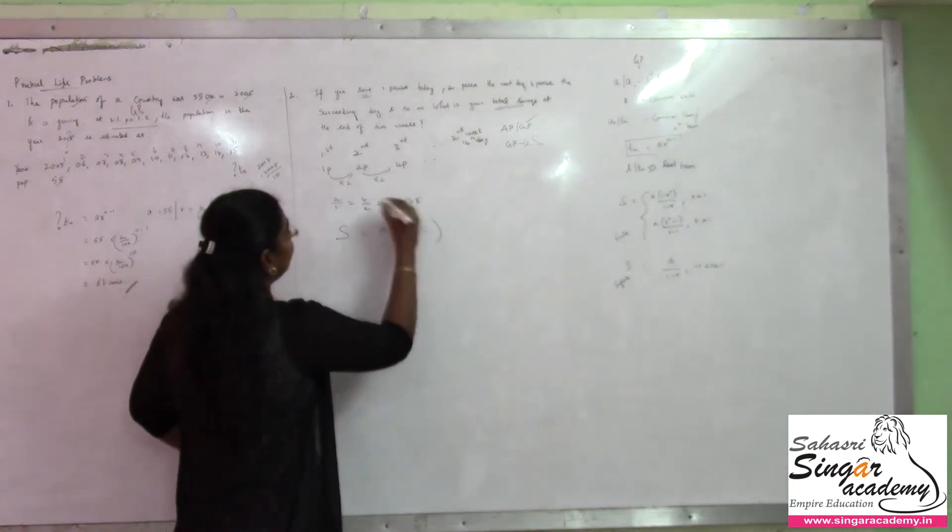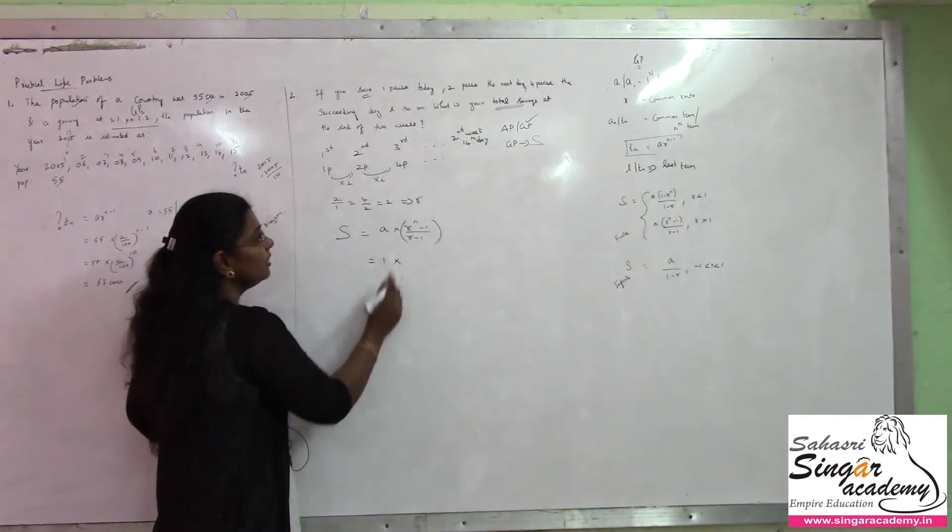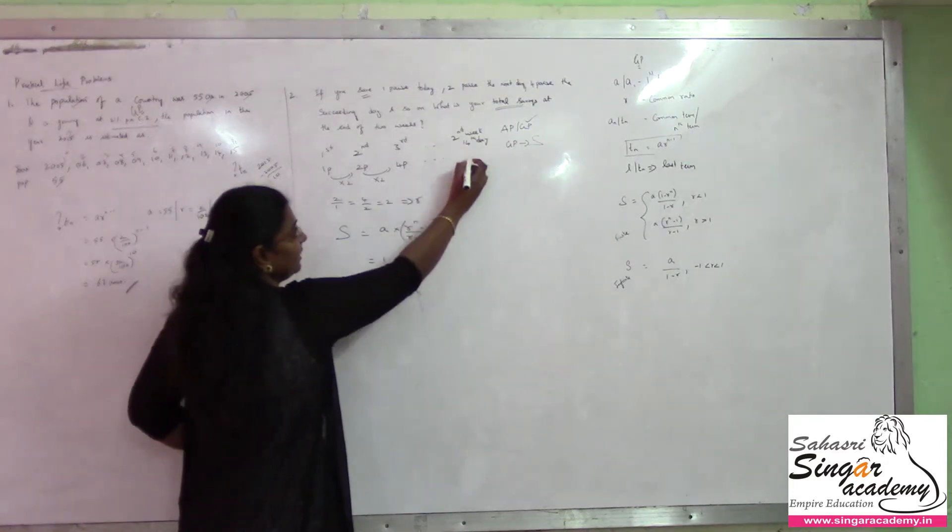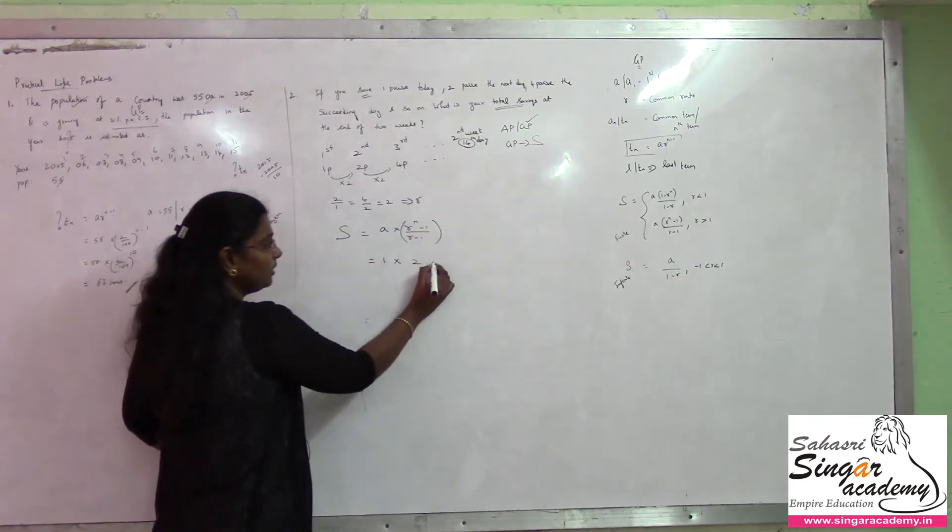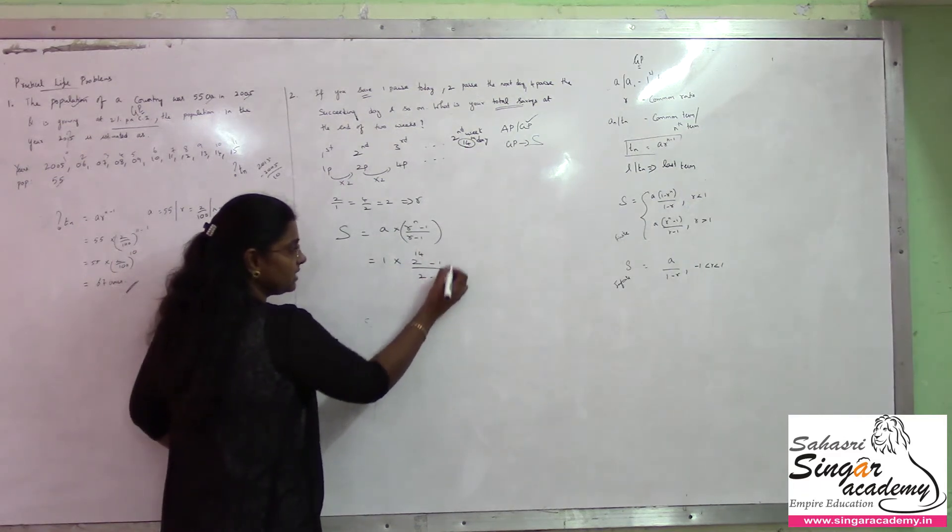Let me substitute a. I know the a value as 1, the very first day saving, into r power n. R is 2 power n. N is 14th day. This is my n value. So, 2 power 14 minus 1 divided by 2 minus 1.